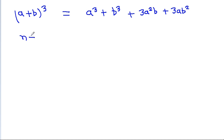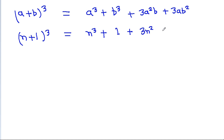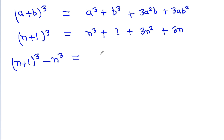So (n+1)³ = n³ + 1 + 3n²·1 + 3n·1², which gives us (n+1)³ = n³ + 3n² + 3n + 1. Rearranging, (n+1)³ minus n³ is equal to 3n² plus 3n plus 1.